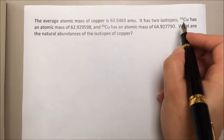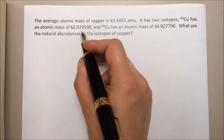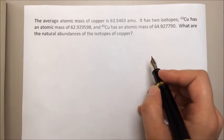It has two isotopes, copper 63 and copper 65, and here are their atomic masses. So if we want to find out what the natural abundances are, we need to know two equations.